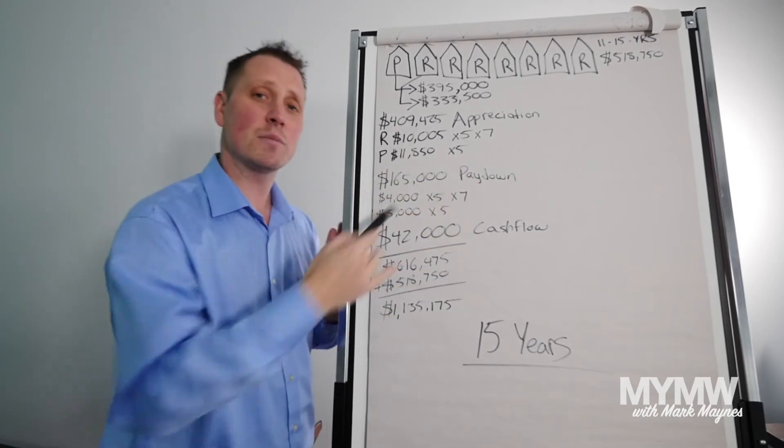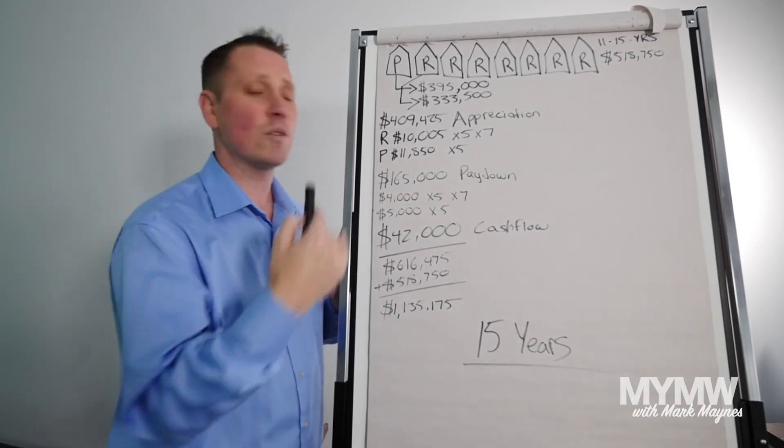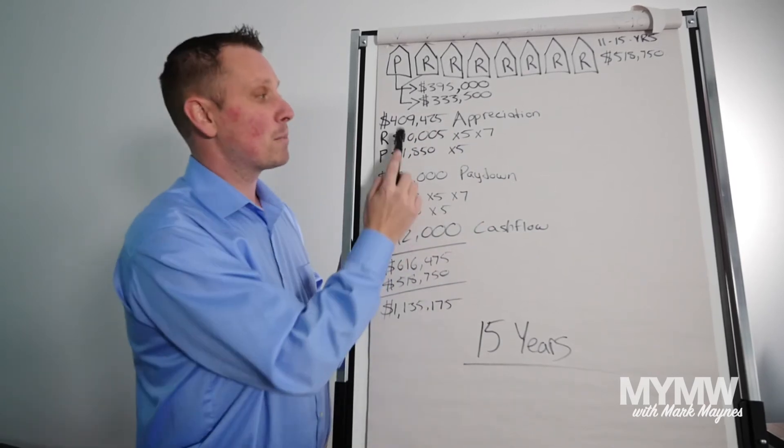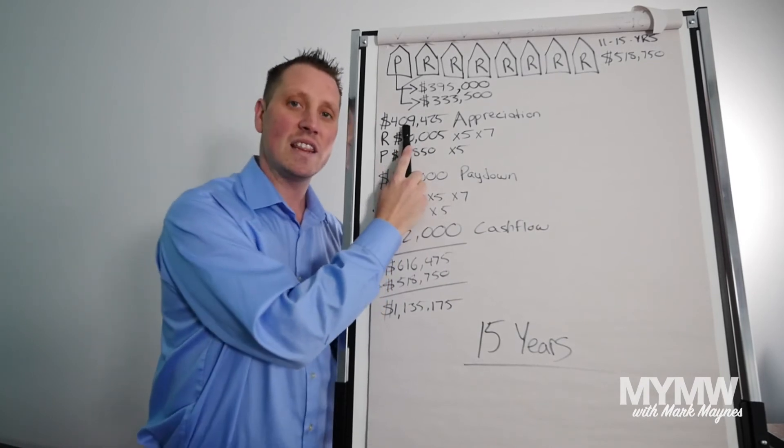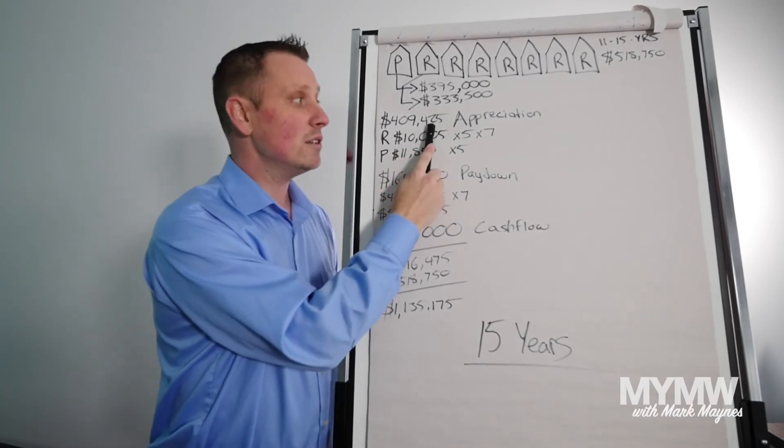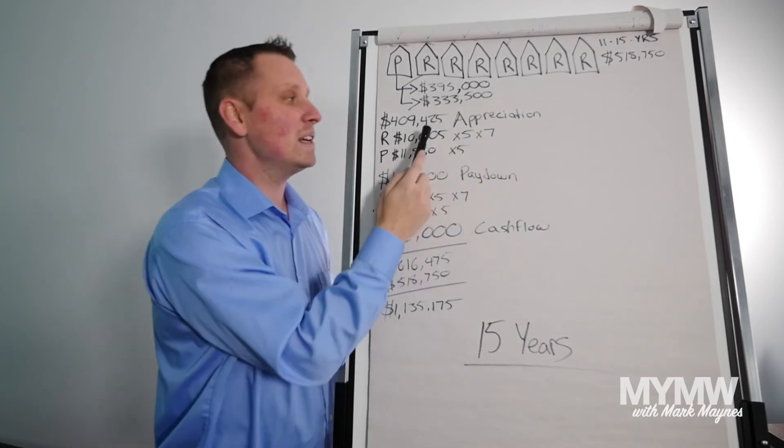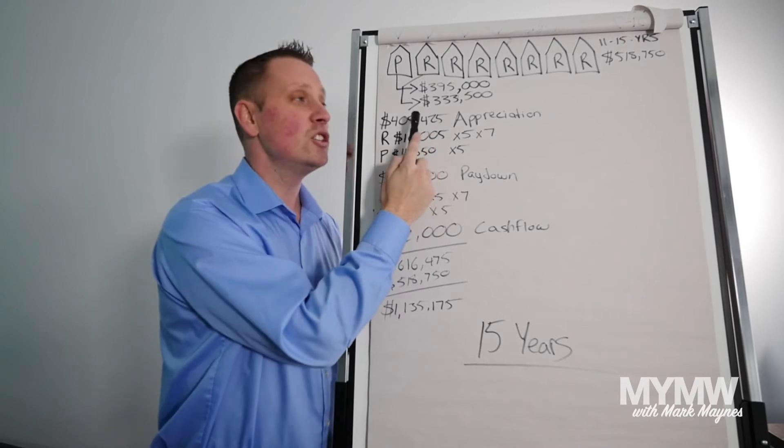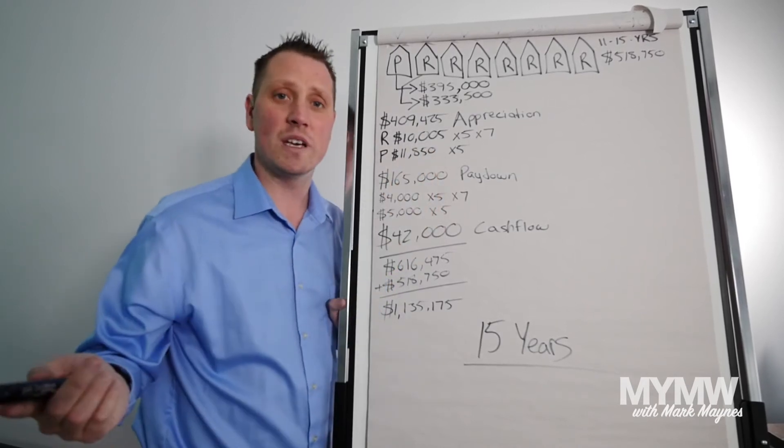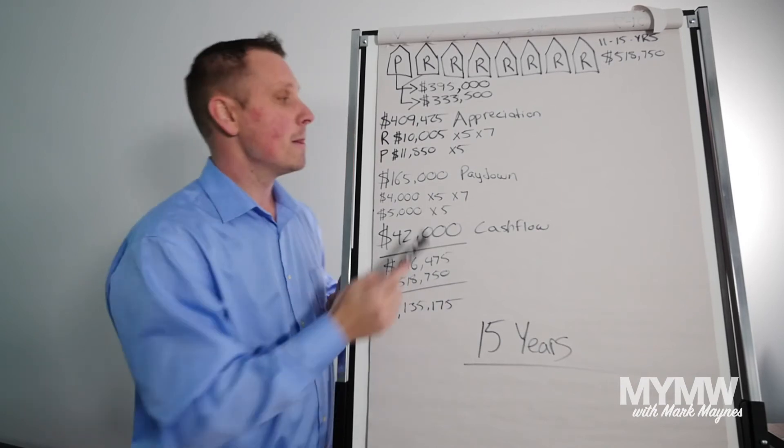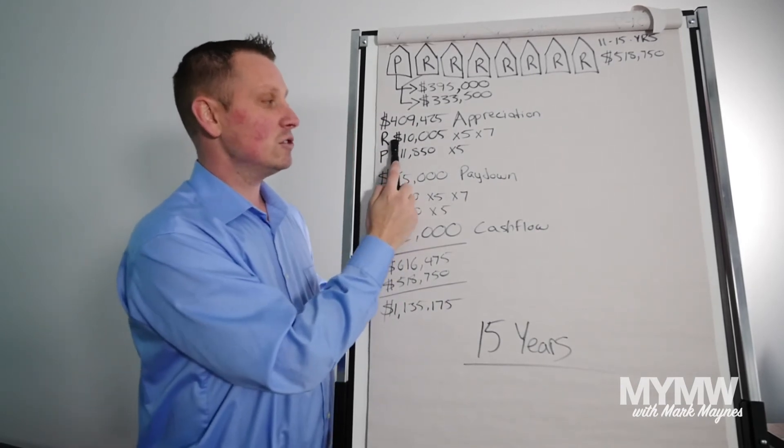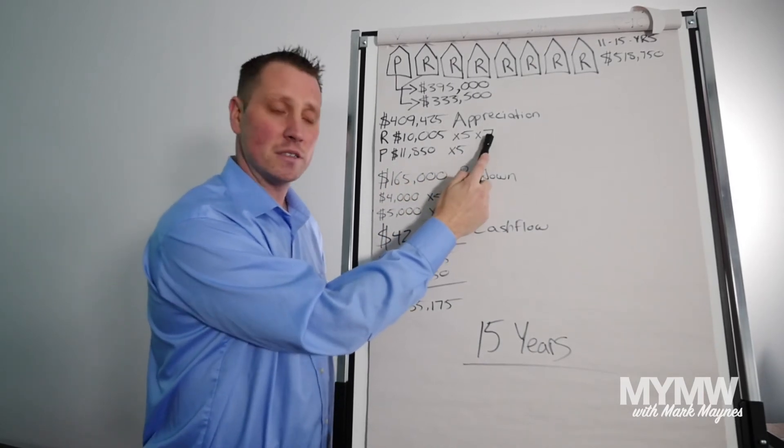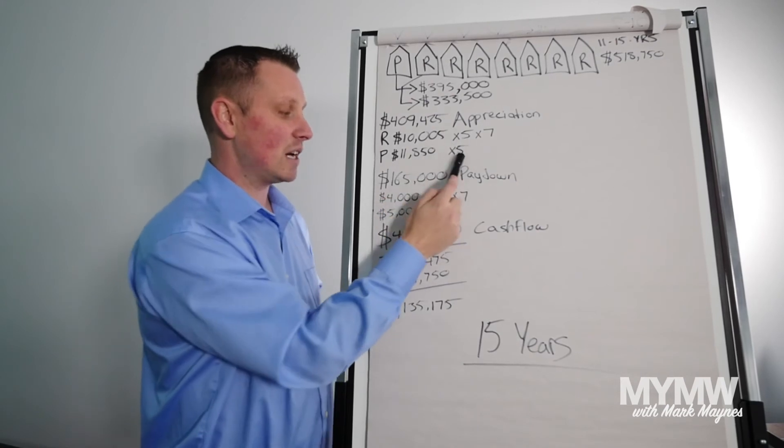So this time, and this is where the numbers just start to explode, and I'm not going to keep going. You can do the math. You could reach out to me and I can do the math with you. Appreciation alone is $409,425. So literally for just owning homes, you're making $400,000. That's literally $80,000 per year just on appreciation. Most jobs, you don't make $80,000 a year anymore. How did I get the numbers? On your rentals, you're making $10,005 times five years times seven properties. Personal is $11,850 a year times five.